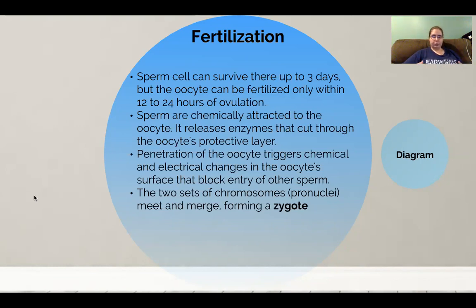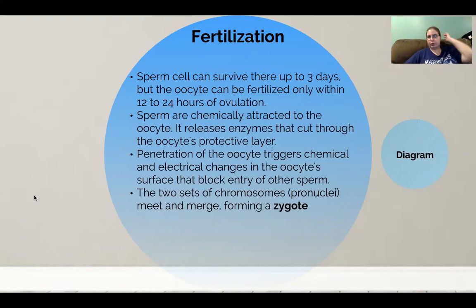As we mentioned previously, the ovaries alternate which one ovulates. So how do the sperm know which fallopian tube to go up? It's actually pretty interesting. The oocyte will give off a chemical attractant — a chemical signature that the sperm are attracted to, kind of like magnets. And that's going to cause the majority of the sperm to go up the correct fallopian tube to have a greater chance of fertilization.